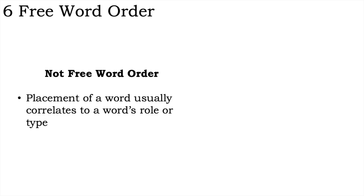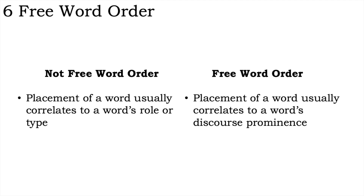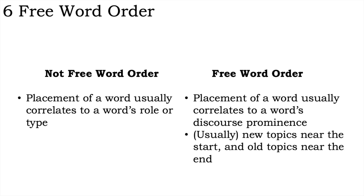In most cases in languages with relatively free word order possibilities, the actual order in a given sentence would be determined primarily by factors such as the discourse prominence of various participants, a desire to emphasise or background a particular event, etc. In general, newly introduced characters or topics will be expressed with nouns placed near the beginning of the sentence, while old established characters or topics will be expressed with nouns towards the end of the sentence, though of course this varies depending on the language and the precise nuances needed.